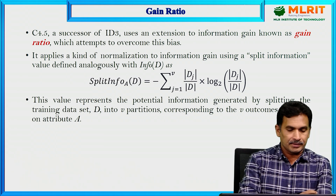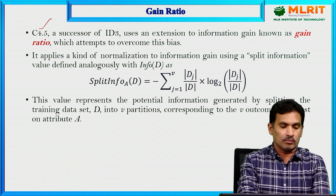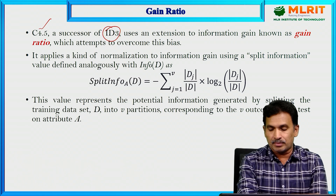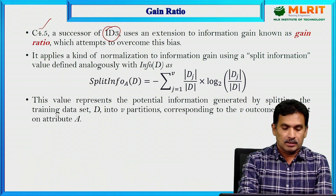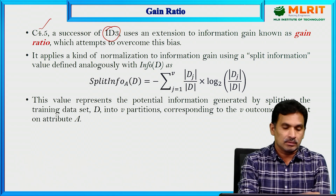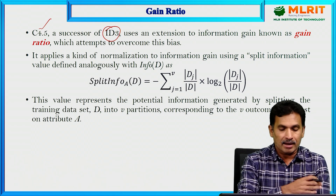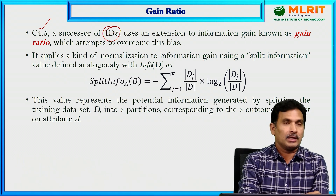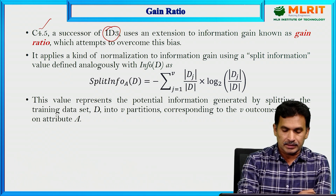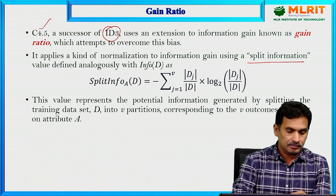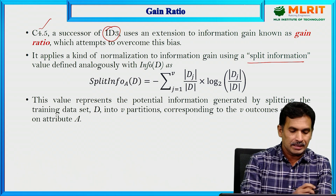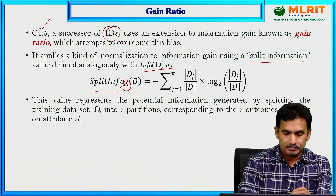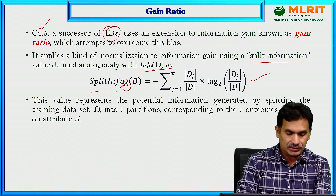Among classification algorithms, C4.5 is one — it is a successor of the ID3 algorithm. C4.5 uses an extension to information gain known as gain ratio, which attempts to overcome the bias present in information gain. It applies a kind of normalization to information gain using a split information value, defined analogously with the Info(D). The split information on attribute A is calculated using this equation.